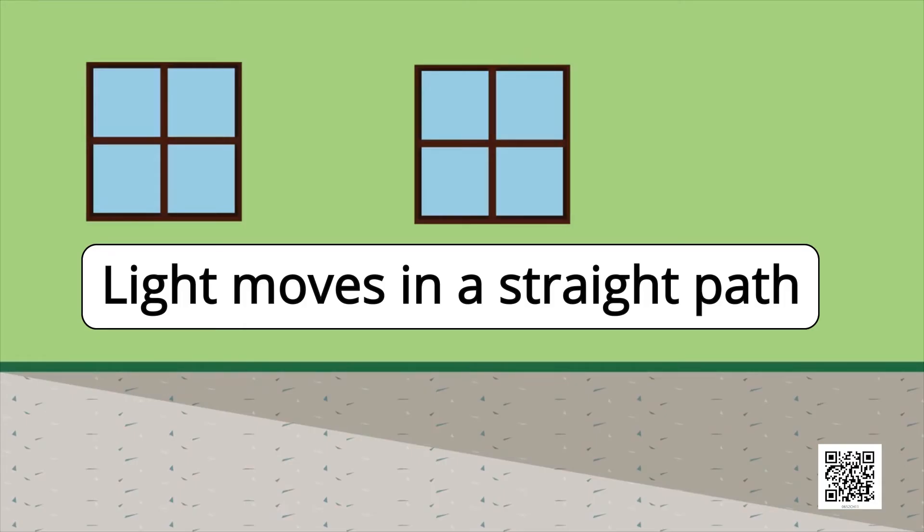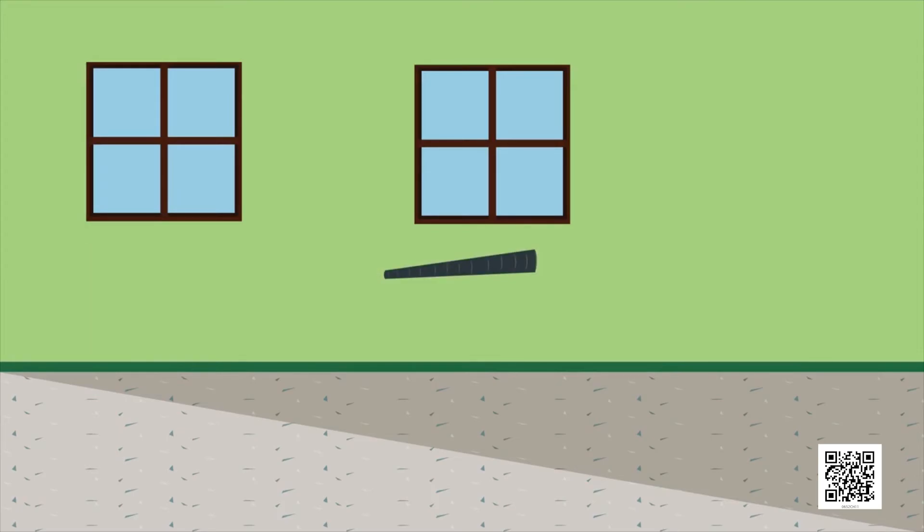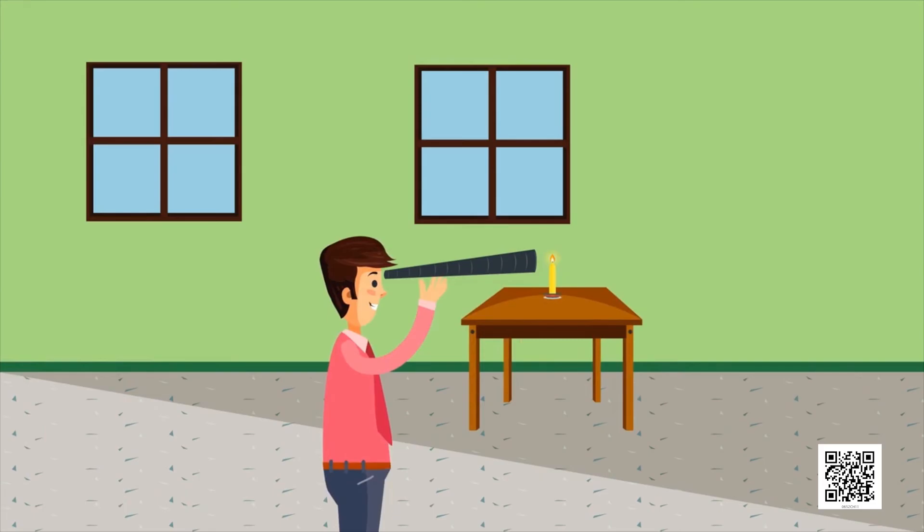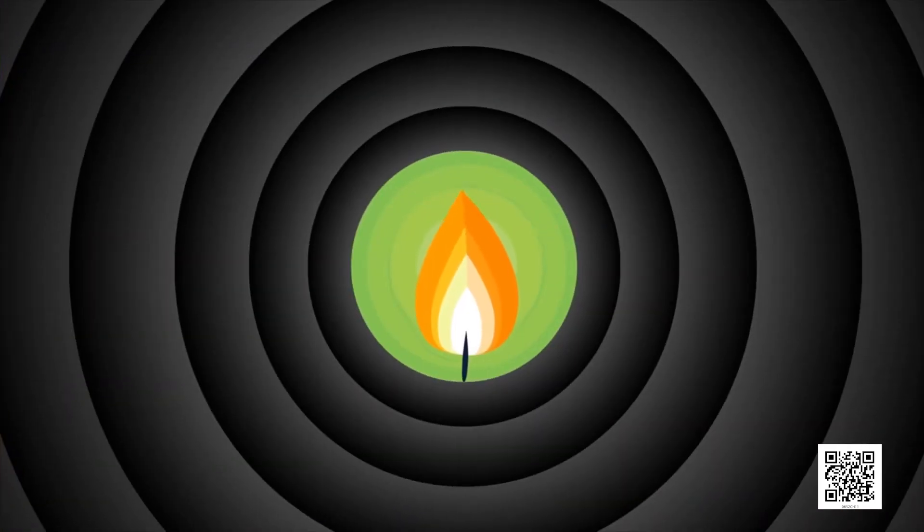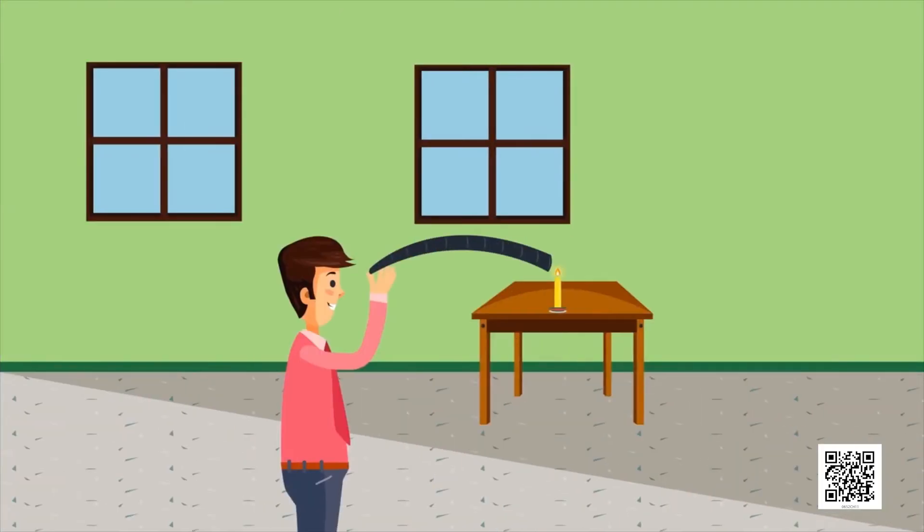Light moves in a straight path. To perform this activity, let us use a piece of a pipe or a long rubber tube. Light a candle and fix it on a table at one end of the room. Now, standing at the other end of the room, look at the candle through the pipe. Is the candle visible? Bend the pipe a little while you are looking at the candle. Is the candle visible now?